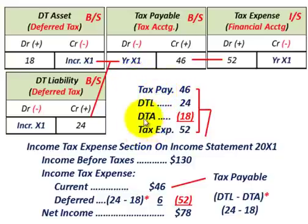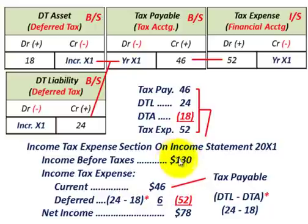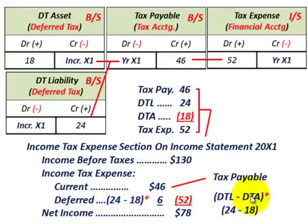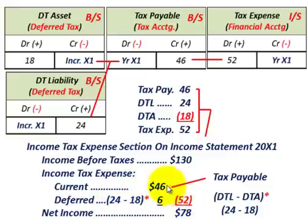In conclusion, we determined income tax expense on the income statement for year 20X1. We started by calculating pre-tax financial income of $130,000, then subtracted income tax expense — both the current portion (tax payable of $46,000) and the deferred portion ($6,000 net). The deferred tax asset reduces tax expense while the deferred tax liability increases it, giving us total income tax expense of $52,000 and net income of $78,000. That concludes our discussion.